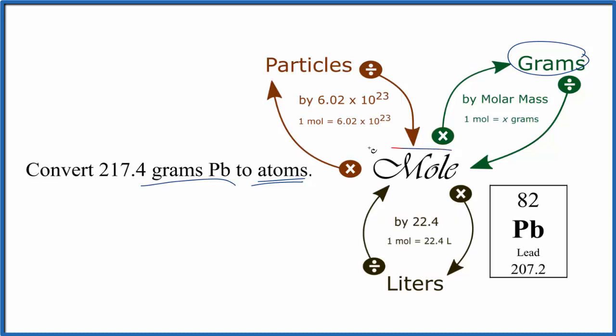We need to first go to moles. So we divide by the molar mass, we get moles. From moles, we multiply by Avogadro's number, and we get atoms.